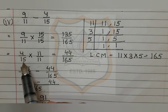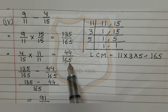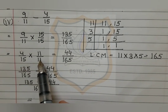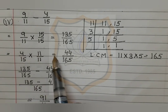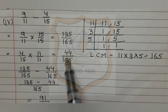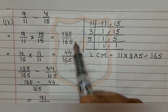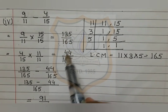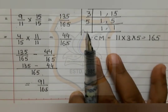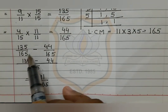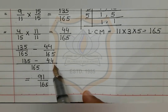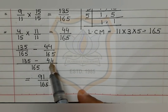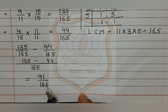For 4 upon 15: 15 is multiplied by 11 to get 165, so the numerator 4 is also multiplied by 11 to give 44. Our fraction becomes 44 upon 165. These are now like fractions: 135 upon 165 minus 44 upon 165. Taking 165 as common and subtracting, 135 minus 44 gives 91 upon 165. We do not convert this to a mixed fraction because it is a proper fraction.